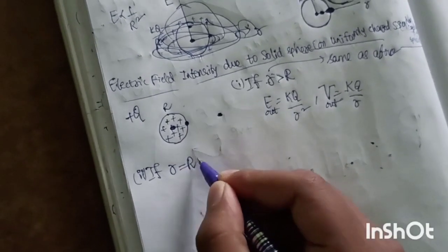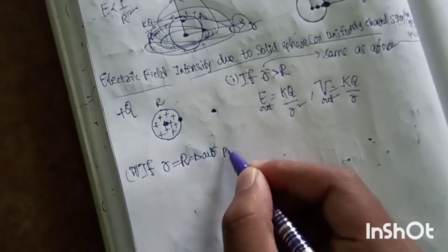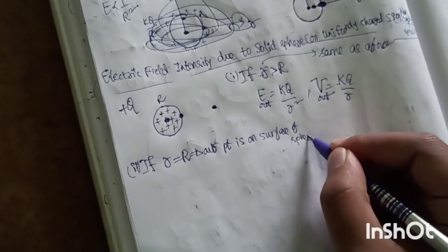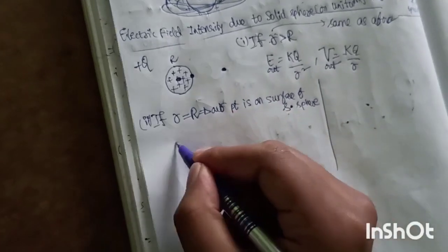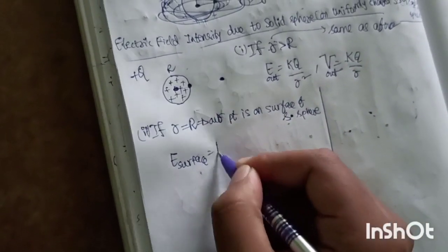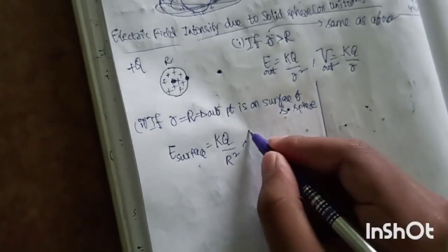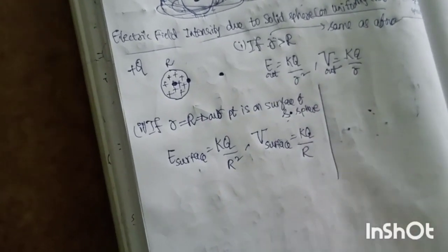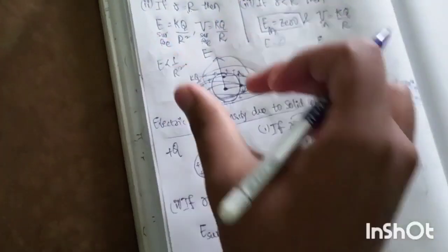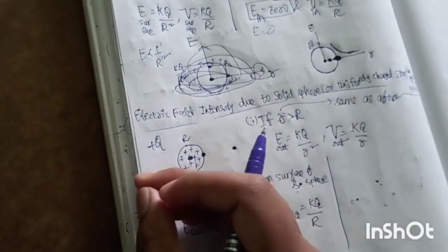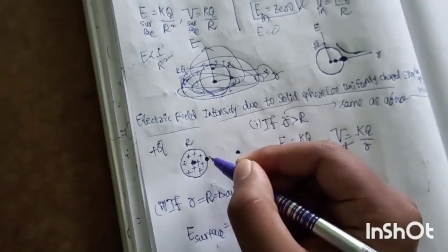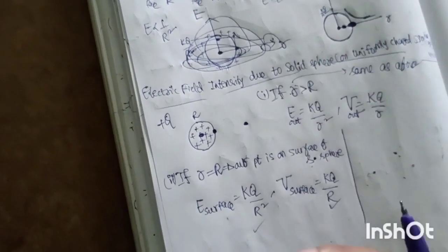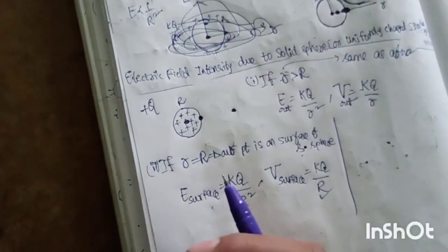Case 2: r equal to capital R — point is on the surface of the solid sphere. E equals kq by R squared and V equals kq by R — same formulas as outside, evaluated at r equal to R.